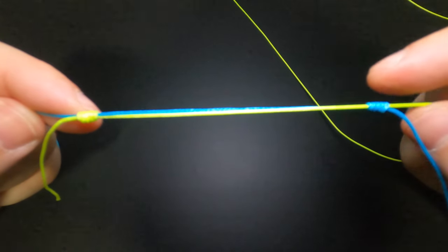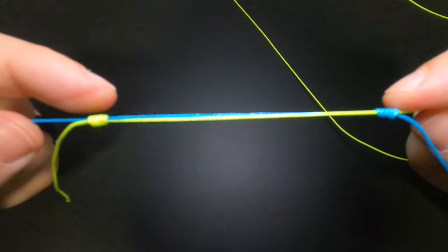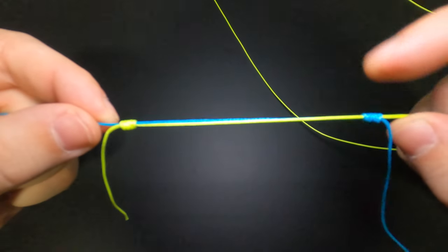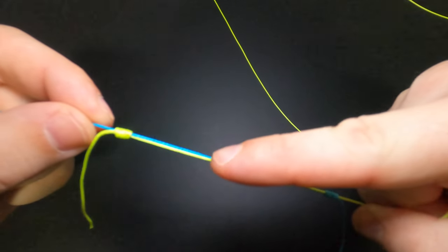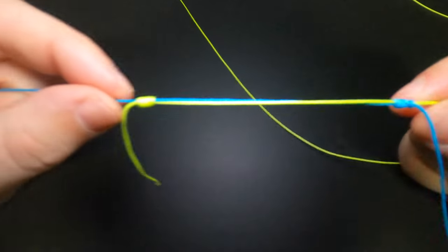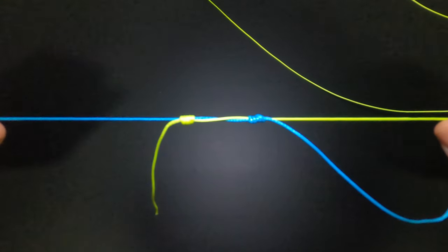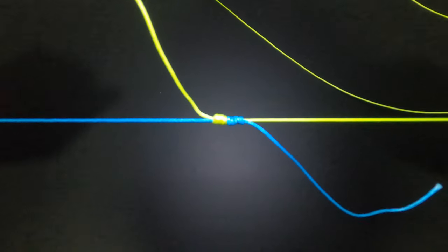Now at this stage we have two Uni knots. We have one tied from our leader to our mainline and one tied from our mainline to our leader. The last step is going to be to bring these together, but before we do we're going to lubricate this entire stretch between the two knots. Just like that. And we're going to go ahead and start pulling these lines apart to bring those two Uni knots together in the middle.